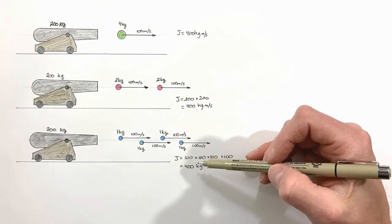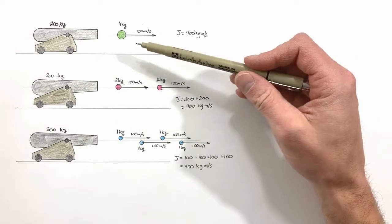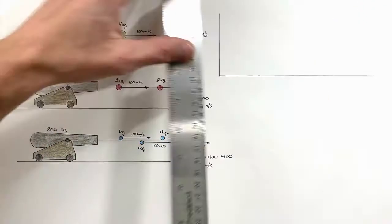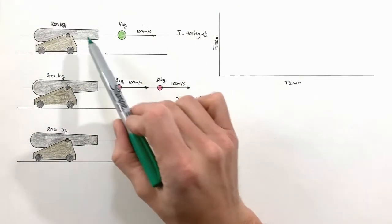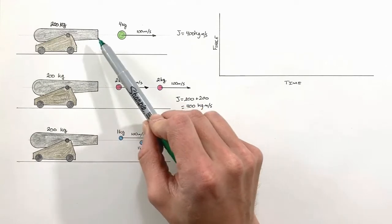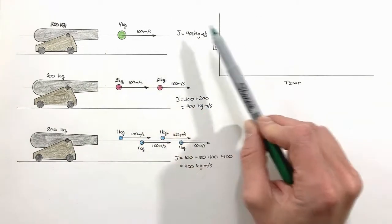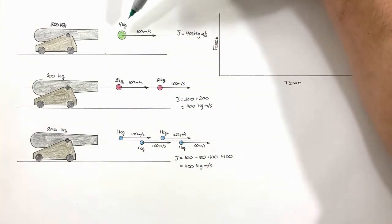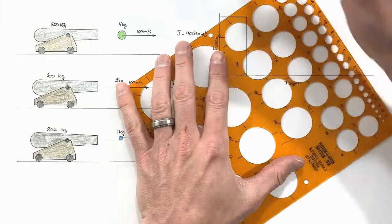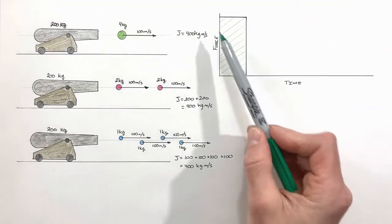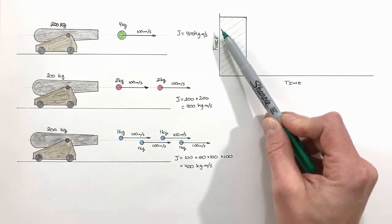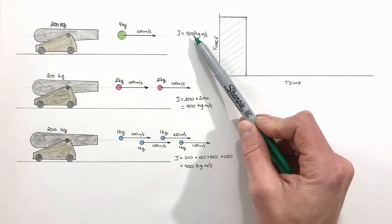To understand how this all ties into thrust, I want to graph the force by the cannon on the cannonballs in each of these three situations. First, the single four kilogram ball is pushed down the cannon for some amount of time and then coasts through the air. What we'd see is a large force for a short amount of time on the force versus time graph, and the total area under this curve is 400 kilogram meters per second.